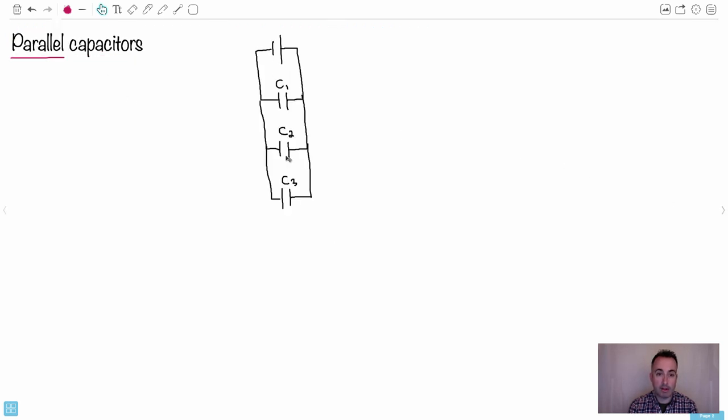Conversely, if we have parallel capacitors, where they have a choice where they can go, we have an equation for that. It goes opposite, so C in parallel is the easy one - that's where you just add them up. You just add them up until you have all the capacitors dealt with. These are your equations that you get on your data booklet. You don't have to memorize them.